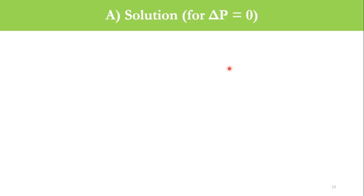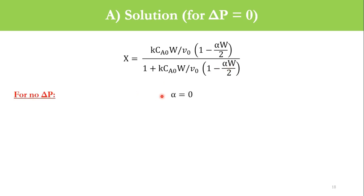Starting with the first case, delta P equals 0, there is no pressure drop in the system. We will start from this equation. For no delta P, alpha will be 0. Once alpha is 0, the bracket terms cancel out and we get the conversion as 82% or 0.82.